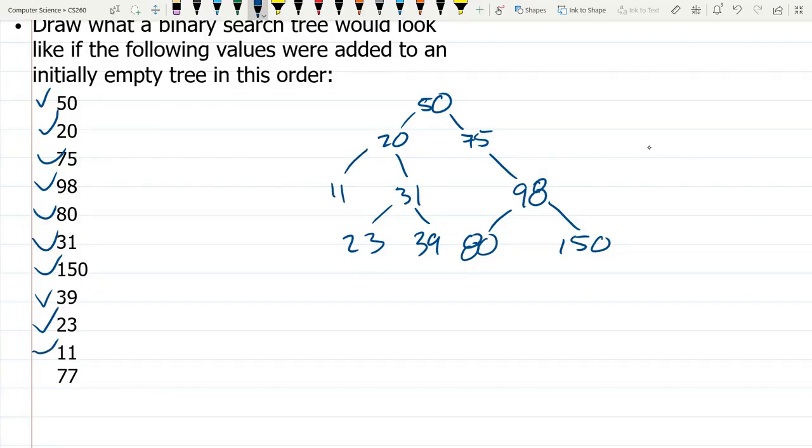77. Greater than 50, greater than 75, less than 98, less than 80. There's 77.